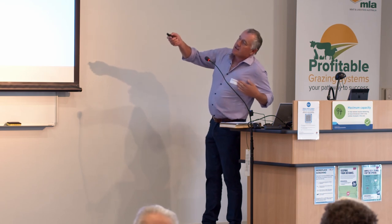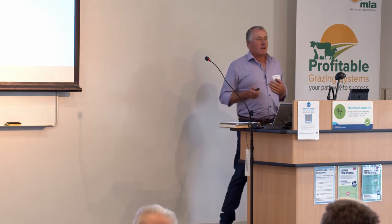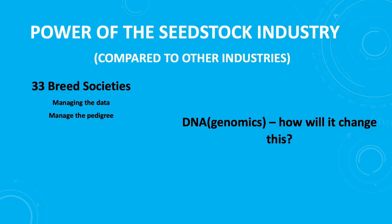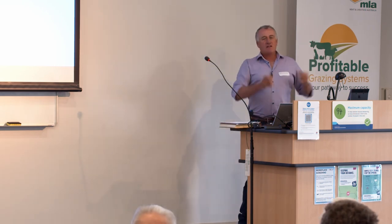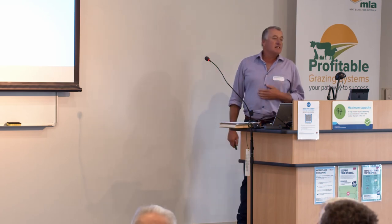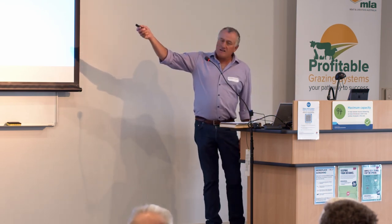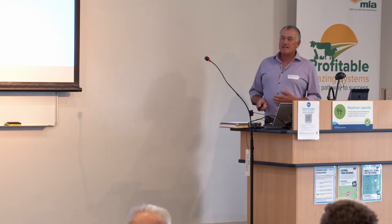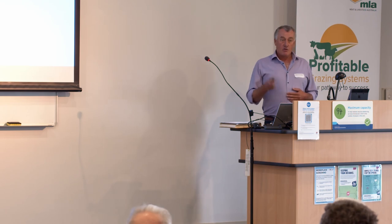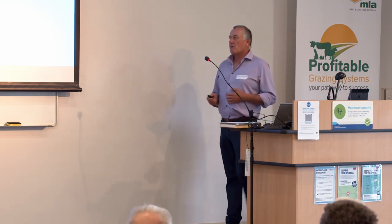Those breed societies managing the data and the pedigree — that's their job. I'm wondering in time if genomics will allow us to get out of that breed society lock, where any commercial producer could do some DNA on his animals, identify superior ones and breed from them. If all we've got to do is manage the data and manage the pedigree, we don't necessarily need a breed society. Not taking away from what the Angus breed has done — that's been a fantastic job for their members. But has it been the best thing for the industry as a whole? Don't know.